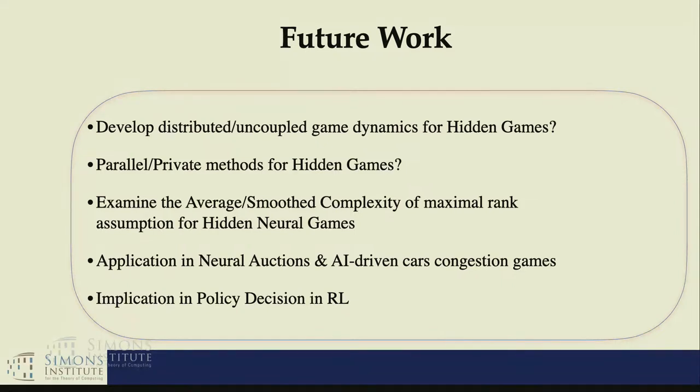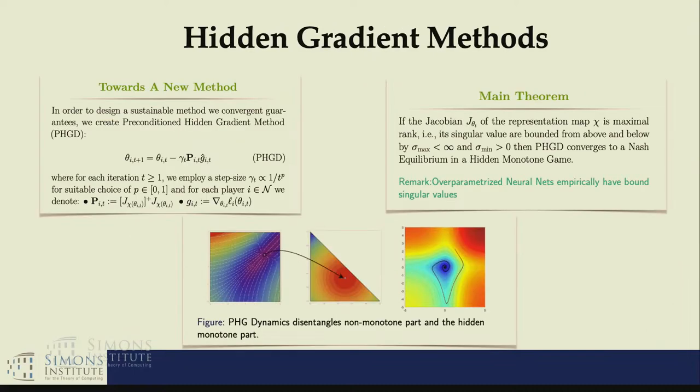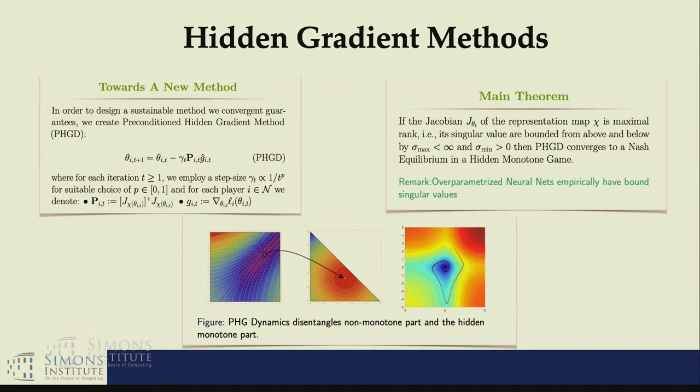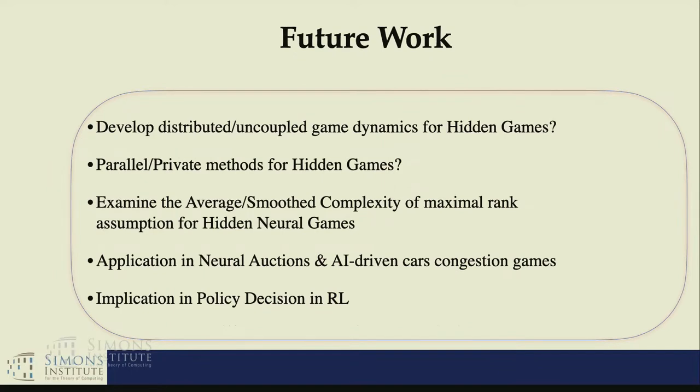Now closing my story, having that in the pocket, what I would like to understand are other interesting questions. First, this is the natural gradient method as I understand it from my perspective - it's a method that is centralized. The question is: can we do that with an uncoupled dynamics? Can we parallelize it better? Can we create private methods that will be secure for every player? The other interesting question is: can I take some neural net and prove with smooth analysis, with some average analysis, this claim that there are multiple ML empirical papers that say, but can we create a mathematical model that shows with smooth complexity that the rank is good, the conditional number of the neural nets are good?